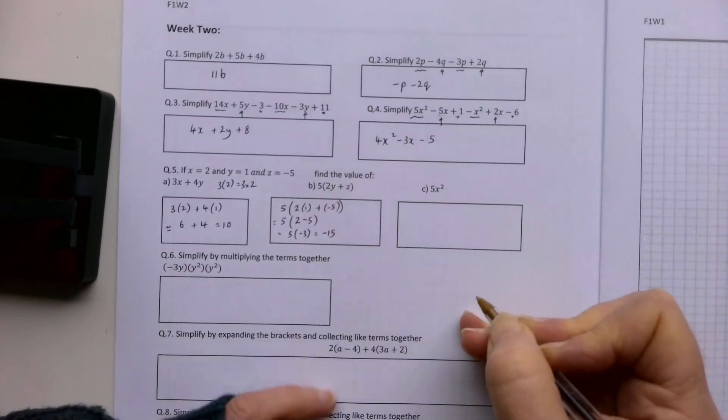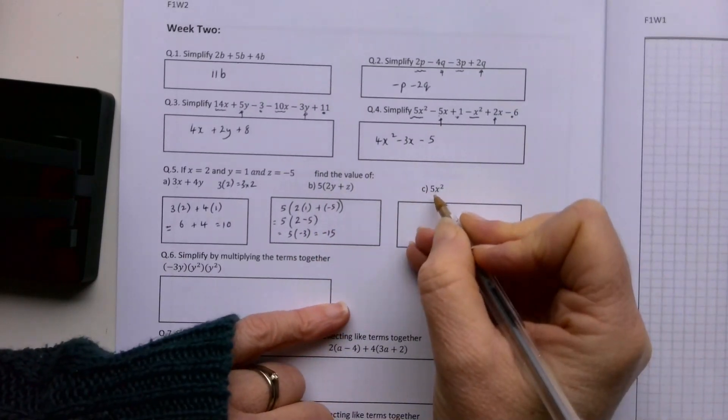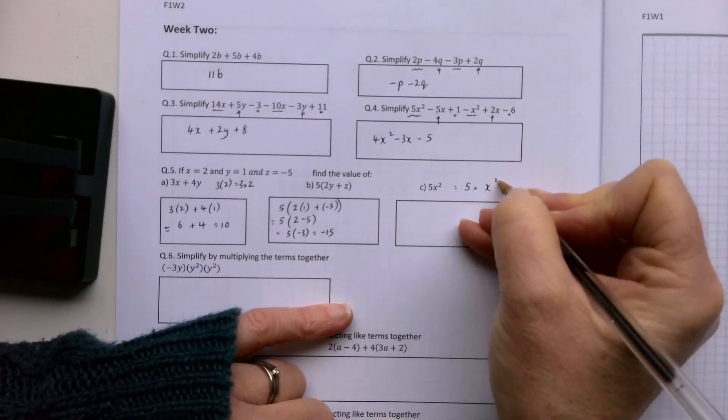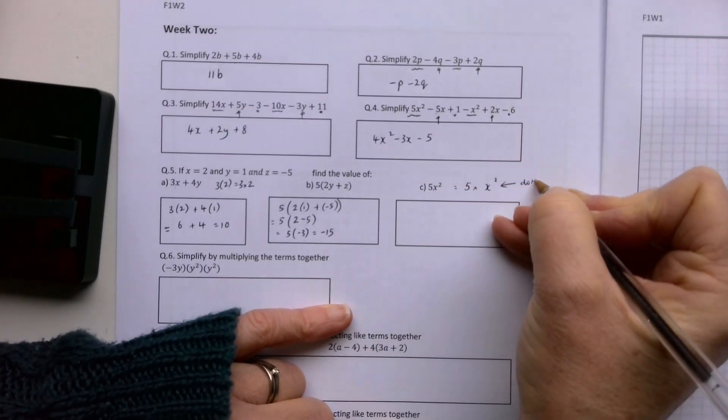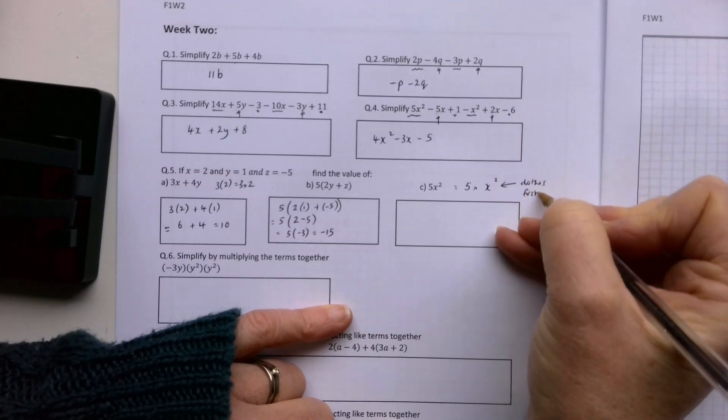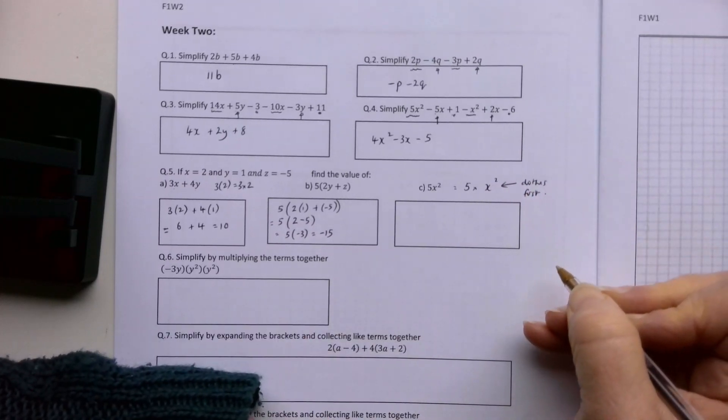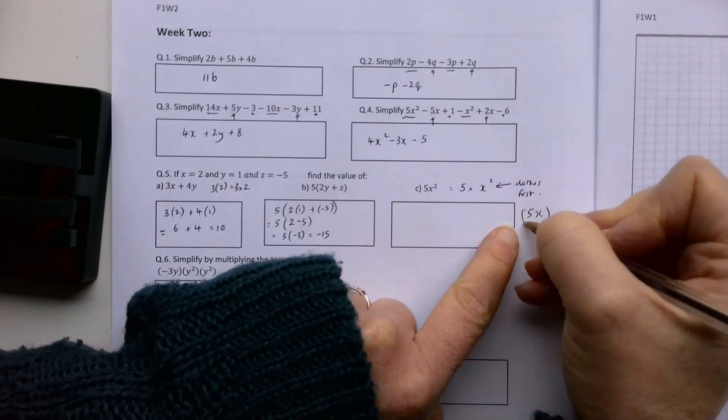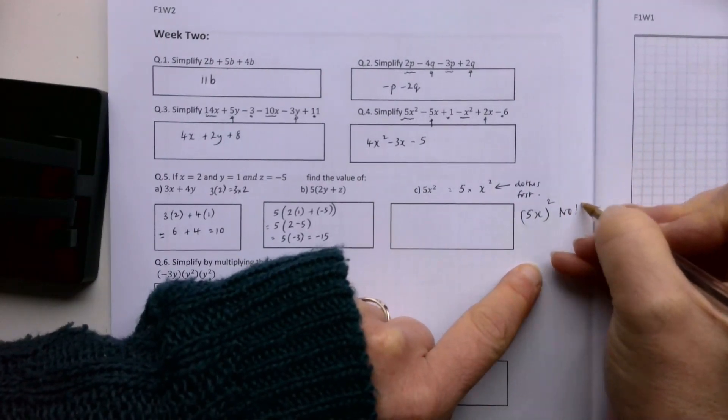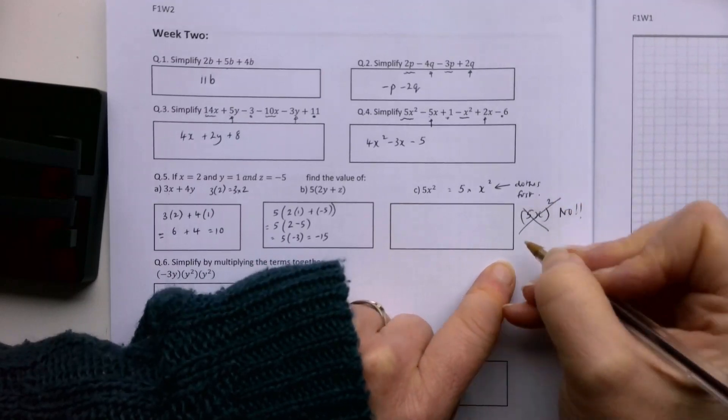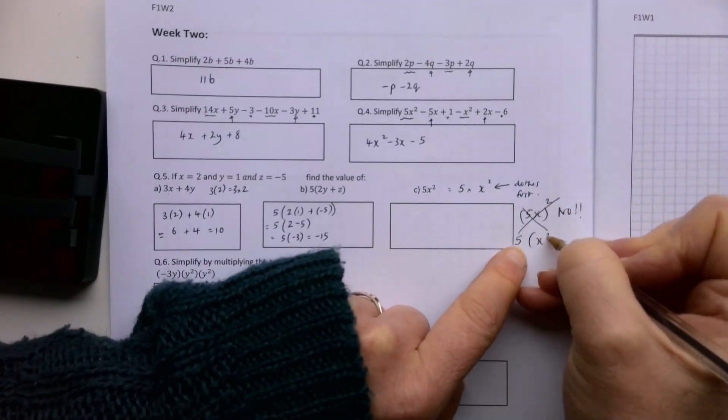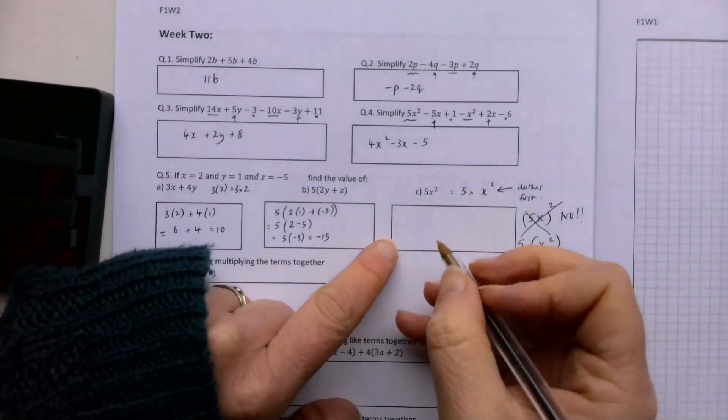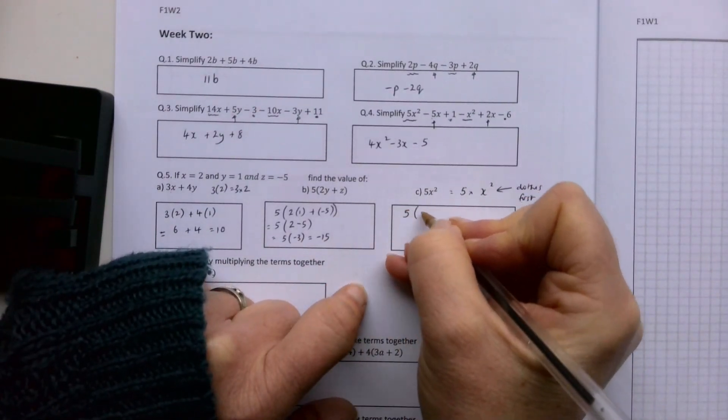5x squared means 5 multiplied by x squared, and you've got to square the x first before you multiply by the 5. Really important - this is a mistake lots of people make. It's not 5x squared first - that's wrong. It's 5 multiplied by whatever x squared is. So 5x squared means 5 multiplied by 2 squared. I square the 2 first, which is 4, so 5 by 4, which is 20.